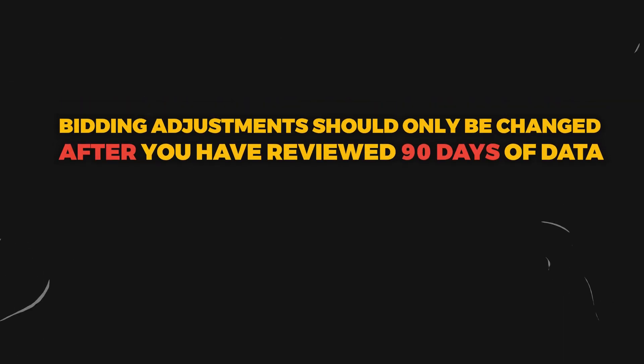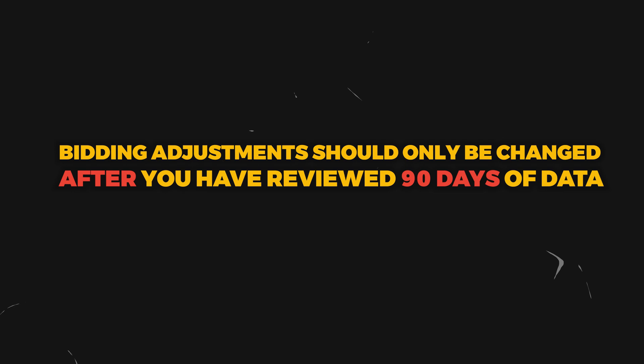This brings us to the third point before we go into the live screen shares: you want to only review and change your bid adjustments over 90 days of data. When I start a new campaign, unless it's a second or third campaign in my account, I won't set a rock solid target ROAS or target CPA until after the first 90 days. Even if I've got 30 conversions, I'll switch to maximize conversion value or maximize conversions, but I'll hold off on that target until I see 90 days of data.